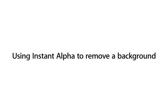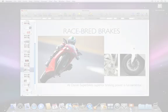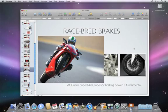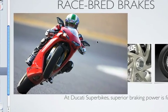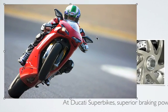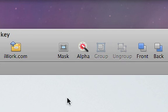Easily create professional-looking graphics by removing the background of an image to make it pop off your slide. Select the image that you want to work on in your presentation, then click Alpha.